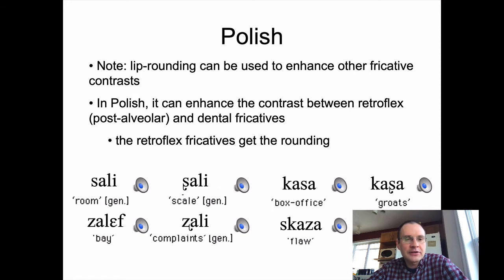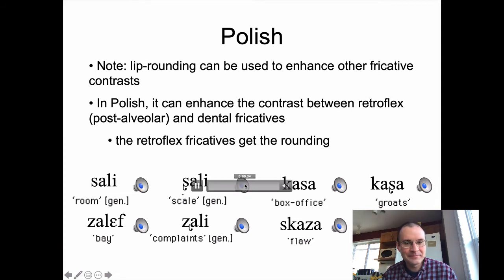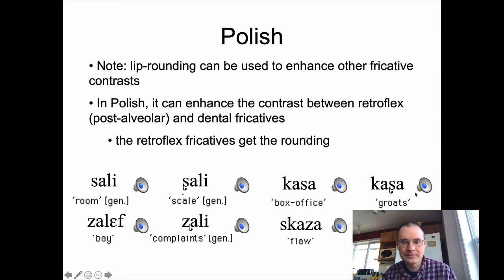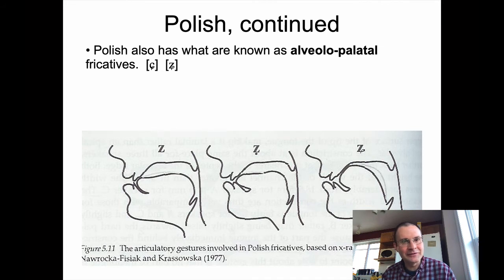Lip rounding can be used to enhance other fricative contrasts. In Polish, it can enhance the contrast between retroflex and dental fricatives — similar to the way it works in English, the retroflex fricatives get the rounding. Polish is chock full of fricatives, which makes it a fun language. Polish also has what is known as alveolopalatal fricatives, which are basically palatalized alveolar fricatives — constricted in the post-alveolar region with a raised tongue in the palatal region.